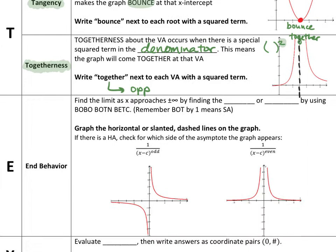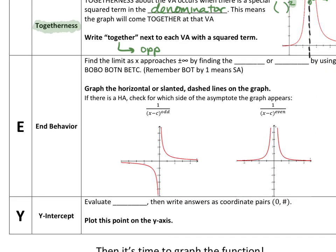For the E part of the Rady method, you're going to be looking at the graph's end behavior. Remember that end behavior is just the horizontal or slant asymptote. Finding the limit as x approaches positive or negative infinity is finding the horizontal or slant asymptote. This is always determined by recognizing if it's a Bobo, a Button, or a Betsy — specifically 'bigger on top by 1' for the slant asymptote. Then you graph these horizontal or slanted dashed lines on the graph.